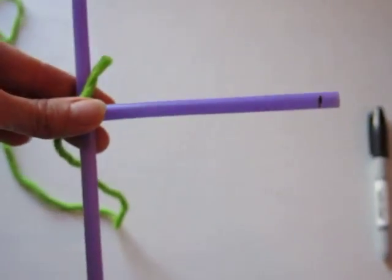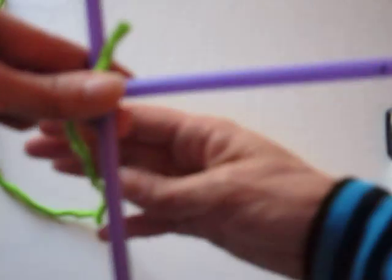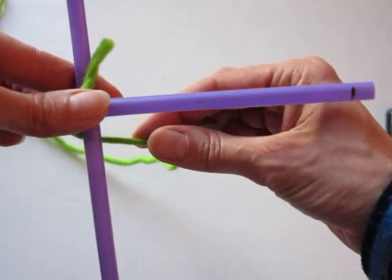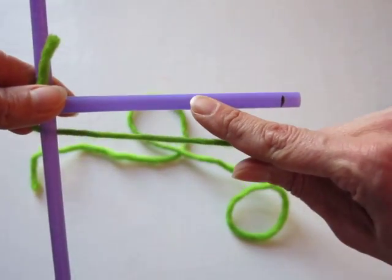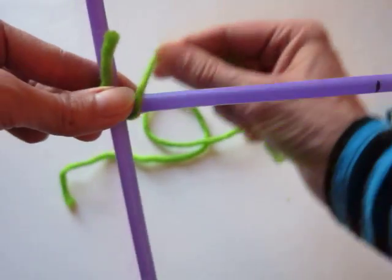Now with my dominant hand, I'm going to do under-over. So I'm going under number one, over number one.